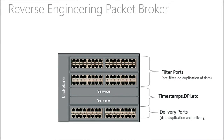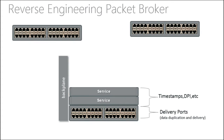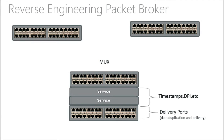This is what our packet broker looks like. We have a set of filter ports — the places where we connect the taps and do the initial filtering. We have the service layer, where you put the timestamps and do the intelligence of the solution. And then we have the delivery ports, which are the end ports where you connect to your stations that are going to analyze the packets. This looks like the initial sniffer problem, but we decided to break this into several layers to make it very flexible.